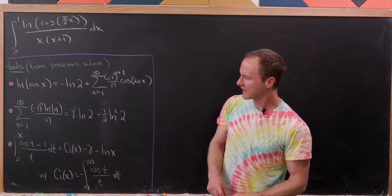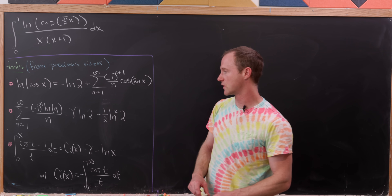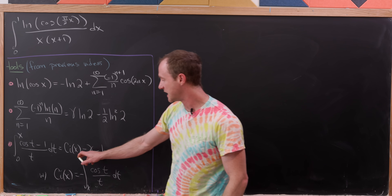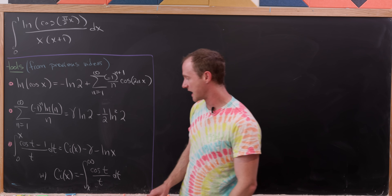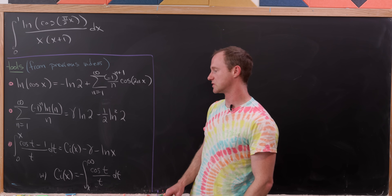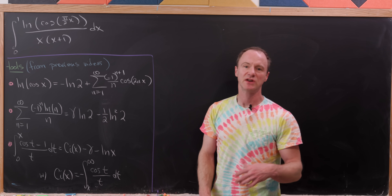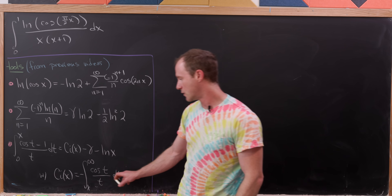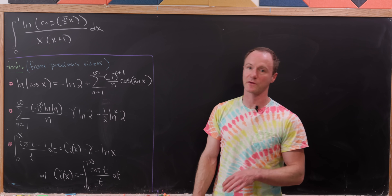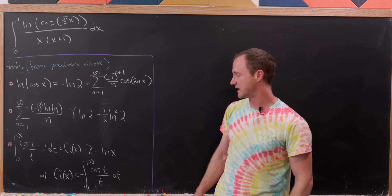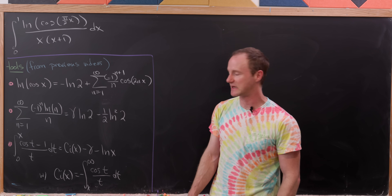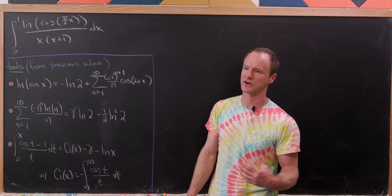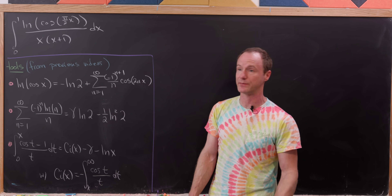Finally, we have that the integral from 0 to x of (cos t − 1)/t dt equals Ci(x) minus γ minus natural log of x. Here Ci(x) is the cosine integral, defined as minus the integral from x to infinity of cos t over t. This third tool comes from standard integral manipulation.